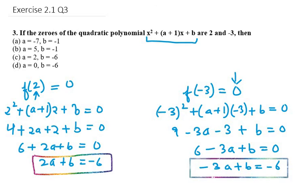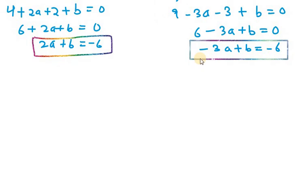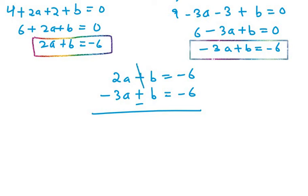So in this case we can apply elimination method here. So using elimination method we get 2a + b = -6 and -3a + b = -6. In this case we need to subtract all the elements. So +b becomes minus b, so we are subtracting, so it will be 0 here.